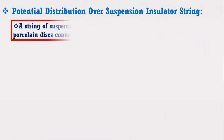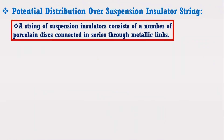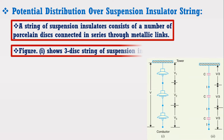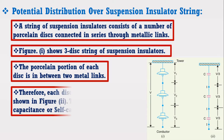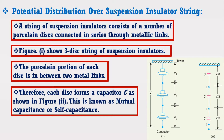A string of suspension insulators consists of a number of porcelain disks connected in series through metallic links. Consider figure 1, which shows a three-disk string of suspension insulators. The porcelain portion of each disk is in between the two metal links. Therefore, each disk forms a capacitor C as shown in figure 2. This is known as mutual capacitance or self capacitance.